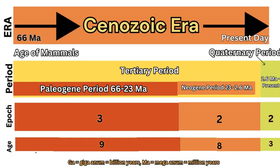Our final era in the Phanerozoic Eon is the Cenozoic, Latin or Greek for new or recent life. It extends from 66 million years ago since the KT extinction to the present day — really the age of mammals. It is separated into two periods: the Tertiary and the Quaternary. The Tertiary is divided into the Paleogene (old gene — about 40 million years) and the Neogene (new — about 20 million years), each separated into epochs and ages. The Paleogene has three epochs and nine ages, the Neogene two epochs and eight ages. The Quaternary is a very short period of only 2.6 million years to the present, with two epochs and three ages.